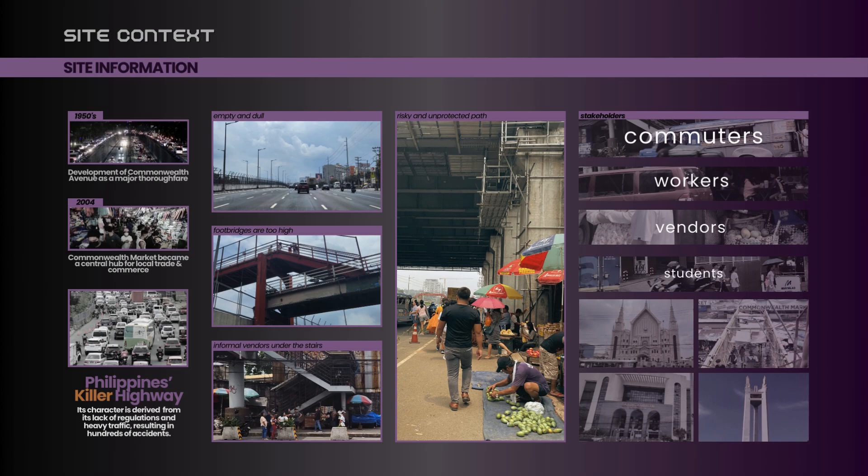Commonwealth Avenue developed as a major thoroughfare during the 1950s, and the peak of its central hub for trade was during 2004. Throughout the years, infrastructure development was established in the area, like the MRT Line 7 project. Since Commonwealth became the route of many commuters and vehicles, accidents were inevitable, primarily due to poor planning — such as no spaces for pedestrians and the lack of strict implementation of regulations for vehicles.